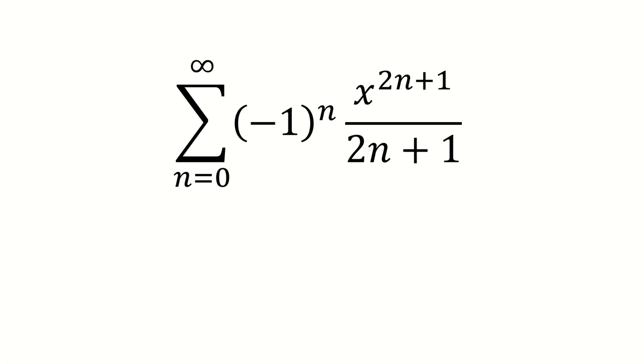In this video, you want to find the sum from n equals 0 to infinity, negative 1 to the nth, times x to the 2n plus 1 over 2n plus 1.